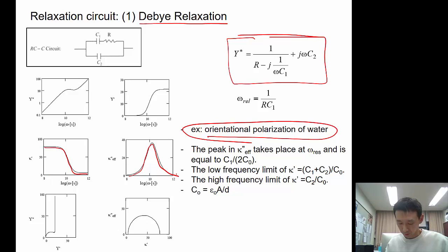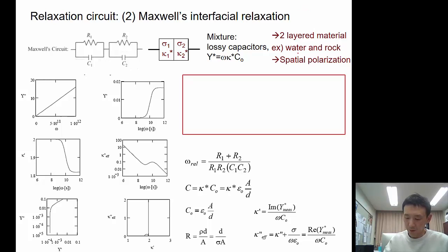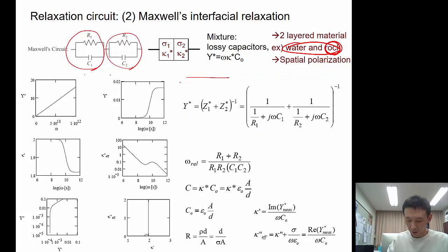What about soil? You have water and rock or water and clay. The rock will give you the spatial polarization for the mineral. So in here, you can have two units: water unit and the clay unit, or the rock mineral unit. Both have different R and C.